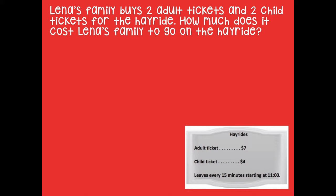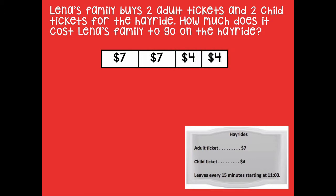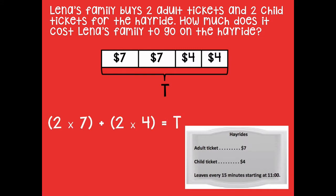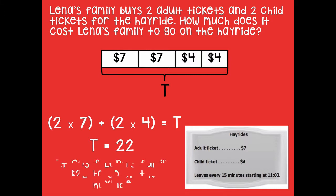Here's another way you could solve it — I could use a tape diagram. I have my two $7 adult tickets and my two $4 child tickets. All of this together I can represent with T for the cost of the tickets. It's the same exact problem, just using a tape diagram with the unknown as T for tickets. Instead of using addition, I could do 2 times 7 — because there are two groups of seven — and 2 times 4 for the two groups of four. I still get the same answer: T equals 22.